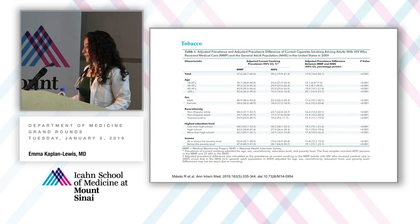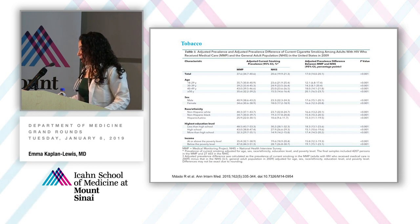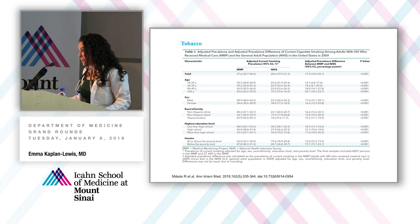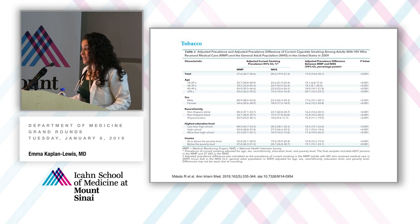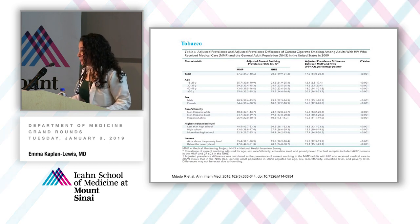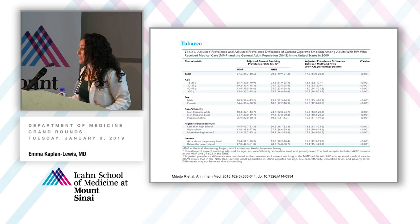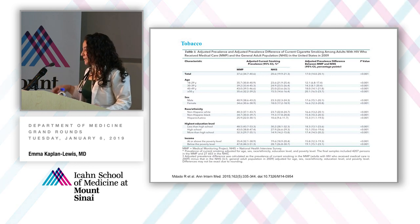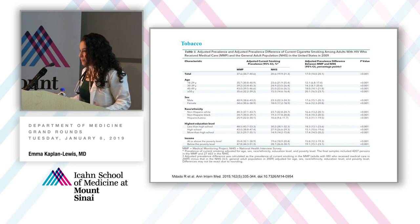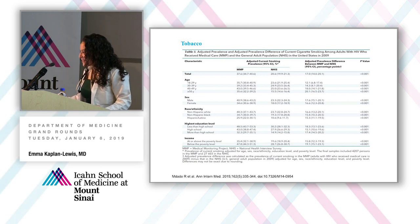Looking at behavioral risk factors: the prevalence of current smoking in people with HIV was close to 40% in 2009, compared to about 20% in the general population. More recent data shows about a three-point decrease in prevalence for each group, but the disparity remains. This holds across every age group, gender, race, ethnicity, and socioeconomic status.